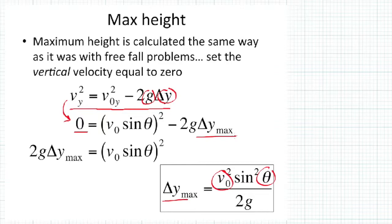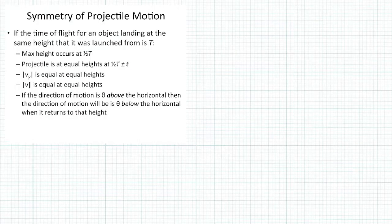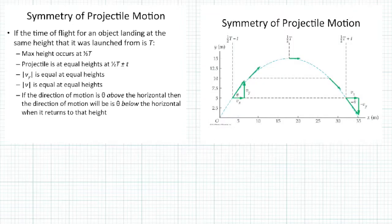This gives us the max height equation: Δy_max = (v_i · sinθ)² / (2g). That is, the initial velocity squared times sine of theta, that whole quantity squared, divided by two times the acceleration of gravity. This is a specialized equation that returns the highest y-displacement given an initial velocity and a launch angle.